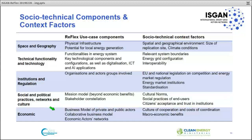Business models of private and public actors must be considered when you want to replicate use cases. In particular, collaborative business models are important — it's not about one company making profit, but increasingly there has to be a lot of cooperation. The socio-technical context factors include the spatial and geographical environment, particularly the size of replication sites. Upscaling only makes sense in a certain dimension. Climate conditions are also very important, as well as the relevant technological system boundaries such as energy grid configuration and interoperability.